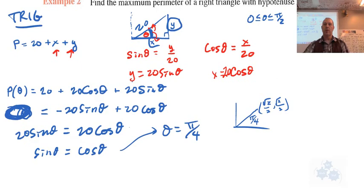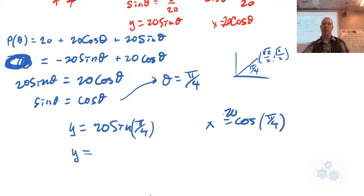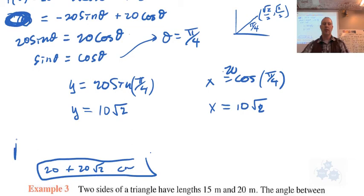So what is x and what is y? Well, y = 20 sin θ = 20 sin(π/4), and x = 20 cos θ = 20 cos(π/4). Sine of π/4 we know is √2/2. Times 20 is 10√2, and x is 10√2. So using the trig method, we get the same perimeter of 20 plus 2 of these.